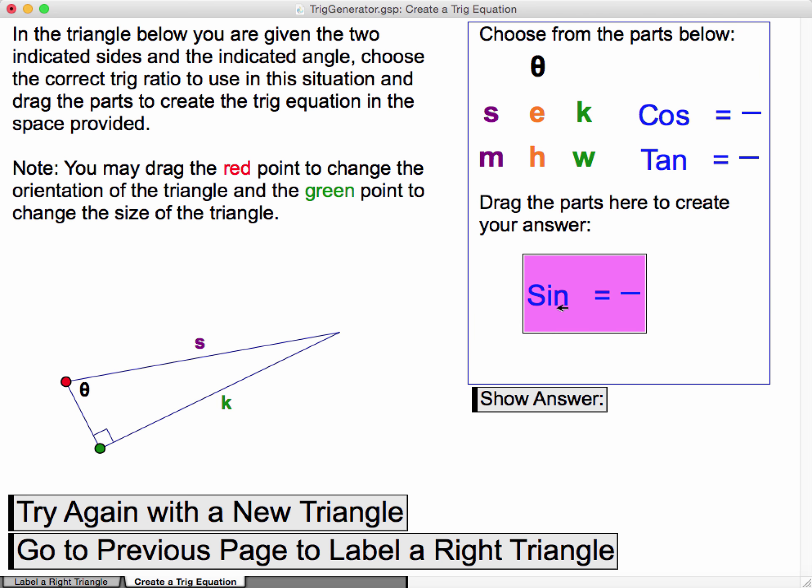Bring that over there, it drags the angle into there as well, so then we put our opposite and our hypotenuse in there. And I've made the names of the sides so that they don't relate to the side names.